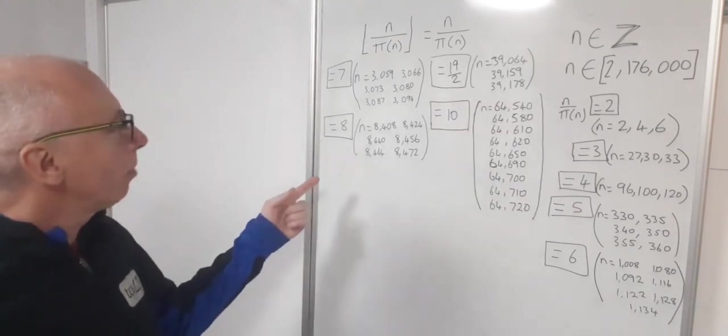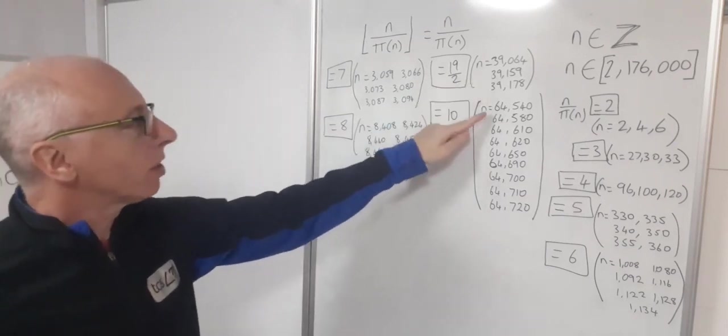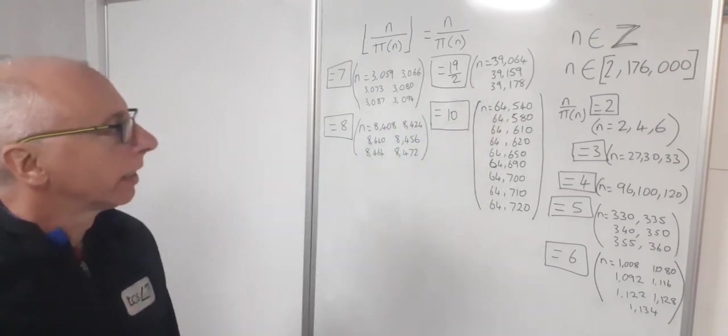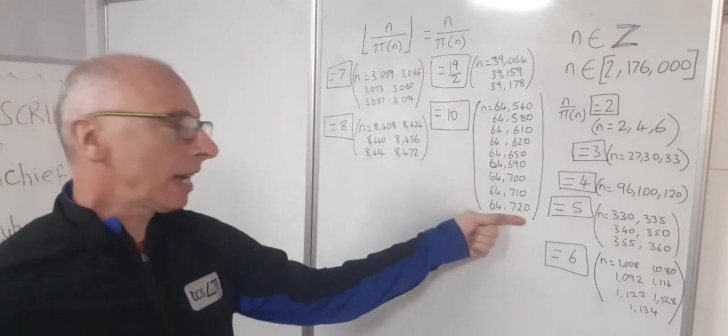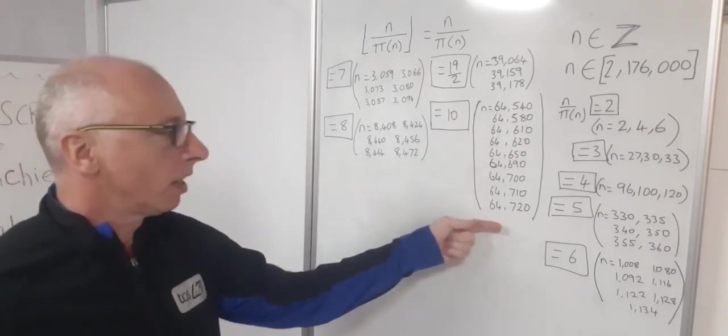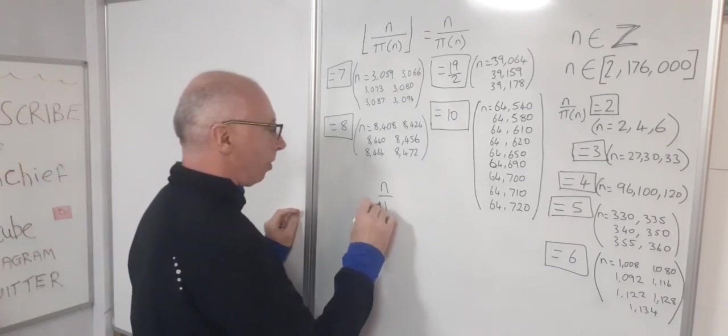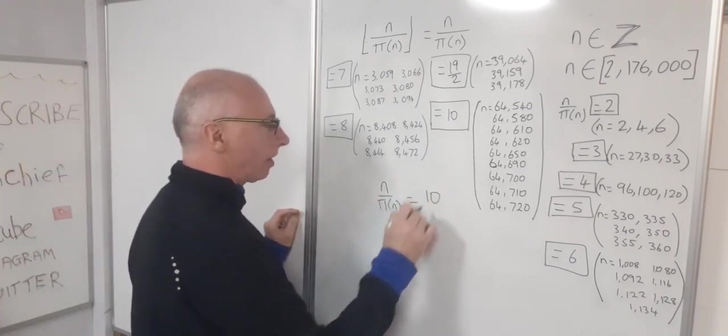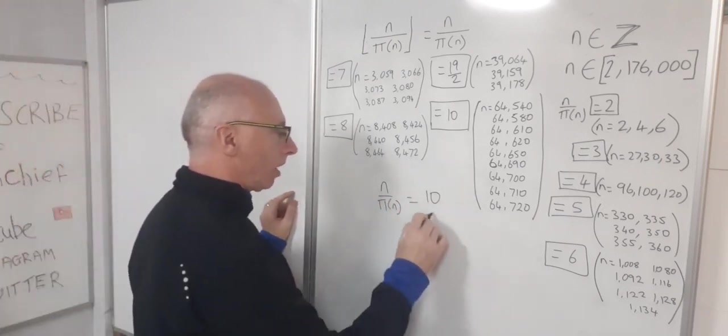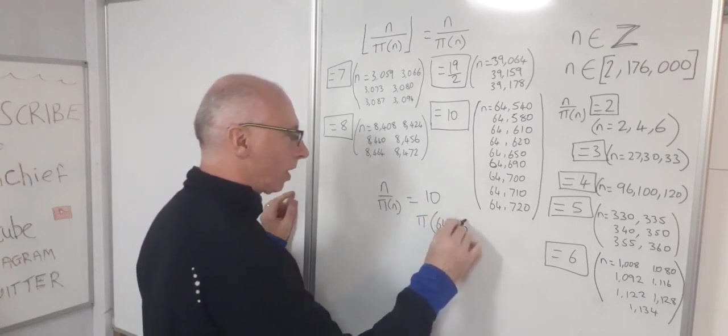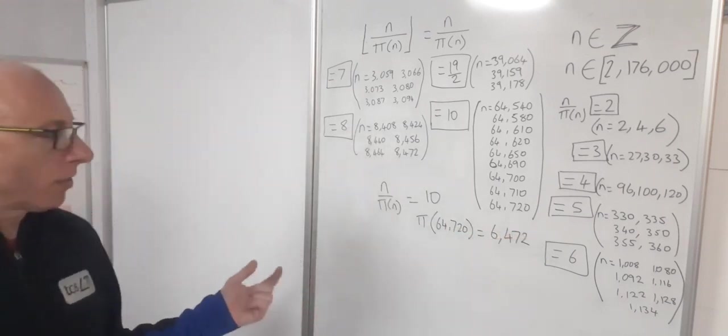Okay, so then I furthered on my search from 39,000. I'm going to get any more integers in between 39,000 and 64,540. So that was my solutions that gave me 10. So let's just have a look at this last one here because then there's a massive jump from here. I'm going to show you what that is. So first of all, let's work out this one. So our n over pi of n, that gave us 10. So in other words, our n is 64,720. So that means pi of 64,720, that must equal 6,472, in order to give us a solution of 10. So that tells us how many prime numbers we've got between 2 and 64,720.